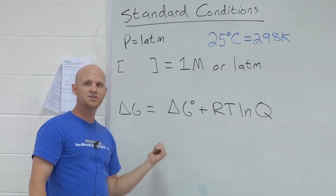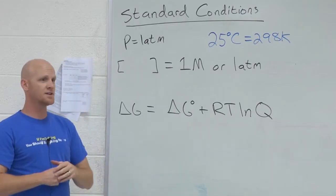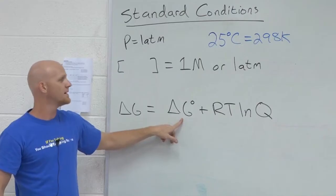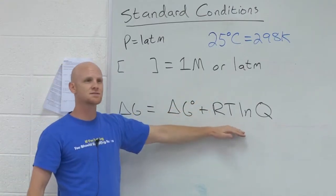So this is how you calculate delta G when you're not under standard conditions. You've still got to use the standard value and look it up and whatever. But now you've got the rest of this as well.